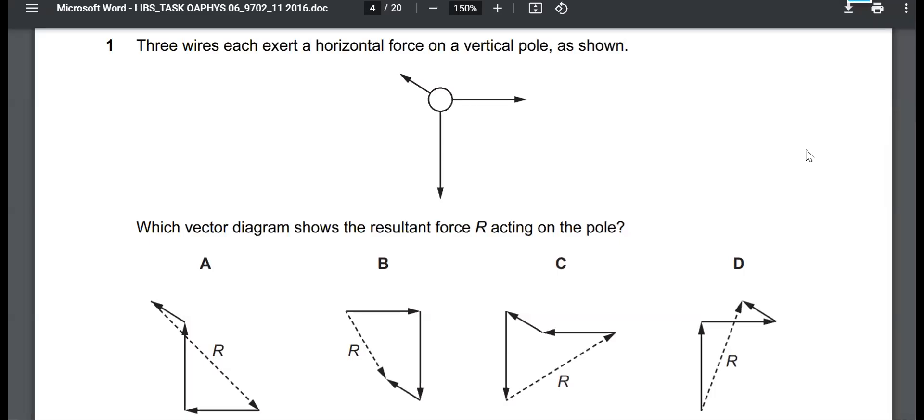All right. This is question one from the May-June administration of ACE Physics Syllabus Code 9702, Question paper 11. It reads: three wires each exert a horizontal force on a vertical pole as shown, which vector diagram shows the resultant force R acting on the pole.